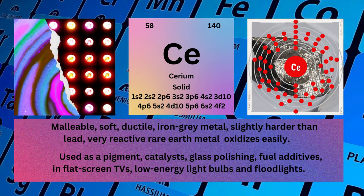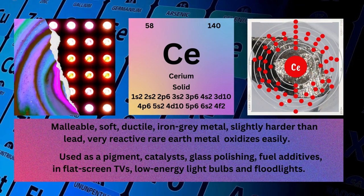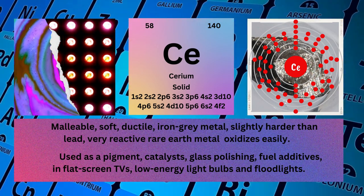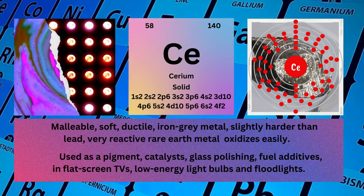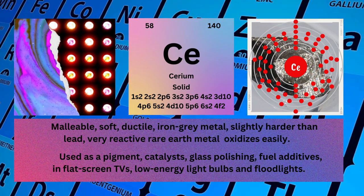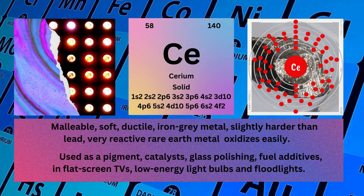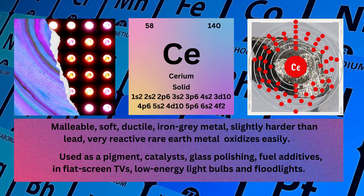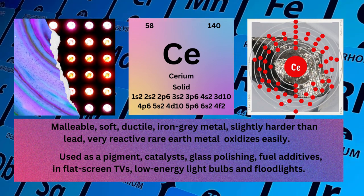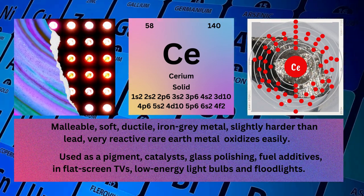Electronic configuration: 1s²2s²2p⁶3s²3p⁶4s²3d¹⁰4p⁶5s²4d¹⁰5p⁶6s²4f². Physical properties: Malleable, soft, ductile, iron-gray metal, slightly harder than lead, very reactive rare earth metal that oxidizes easily.